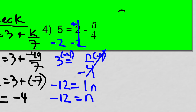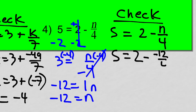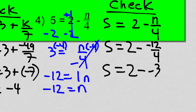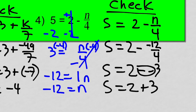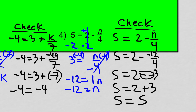The check: 5 equals 2 minus N over 4. Substitute in negative 12: 5 equals 2 minus negative 12 over 4. We divide first — negative 12 divided by 4 is negative 3. So 5 equals 2 minus negative 3, which is like 2 plus 3. And that is true: 5 equals 5. So our answer of negative 12 was correct.